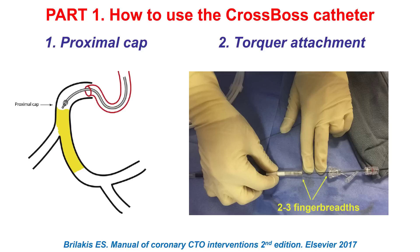This is how the CrossBoss technique is done. The first step is to advance a workhorse guide wire to the proximal cap, then the CrossBoss catheter is advanced over this guide wire, then the guide wire is withdrawn inside the CrossBoss catheter. This is probably the only device advanced by pushing, not over a guide wire. The next step is to secure the torquing device approximately two to three finger-breadths from the hub.